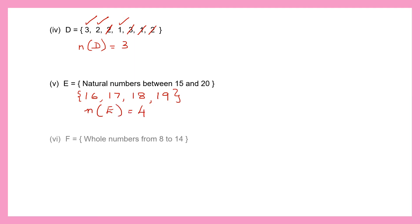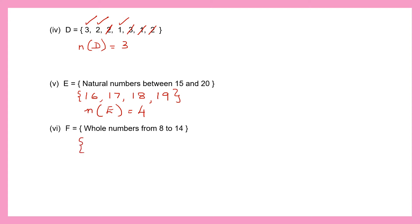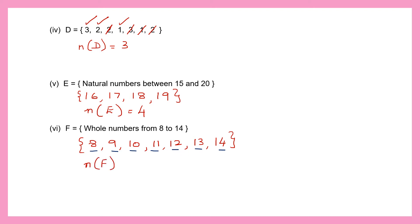Question 6: Set F has whole numbers from 8 to 14. Let's write those down: 8, 9, 10, 11, 12, 13 and 14. Because it says from 8 to 14, we have to include 8 and 14. Now let's count the number of elements: 1, 2, 3, 4, 5, 6, 7. So the cardinal number of set F is 7.